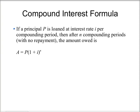Again, for this section, the formula should look very familiar — they're pretty much the same as the ones for savings with compound interest. If you have a loan with a principal amount P, at an interest rate I per compounding period, then after N compounding periods, if you make no payments on the loan, the amount owed is equal to P times (1 + I) to the N. This is exactly the same as the compound interest formula for savings.